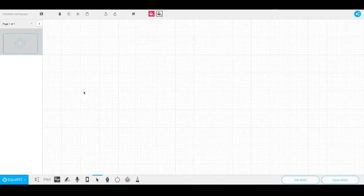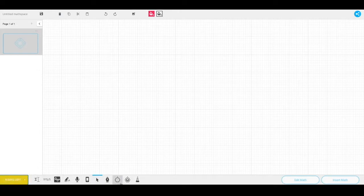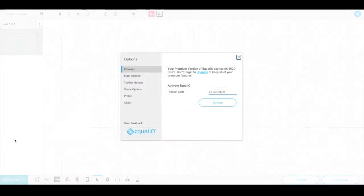Once you have accessed the Mathspace in EquatIO, you will see a toolbar at the bottom of your screen. You will see a variety of input methods which we are going to cover in more detail throughout this video. The first blue rectangle option will provide you with details about the EquatIO version you are using, the font size, the language options, and how to contact support.